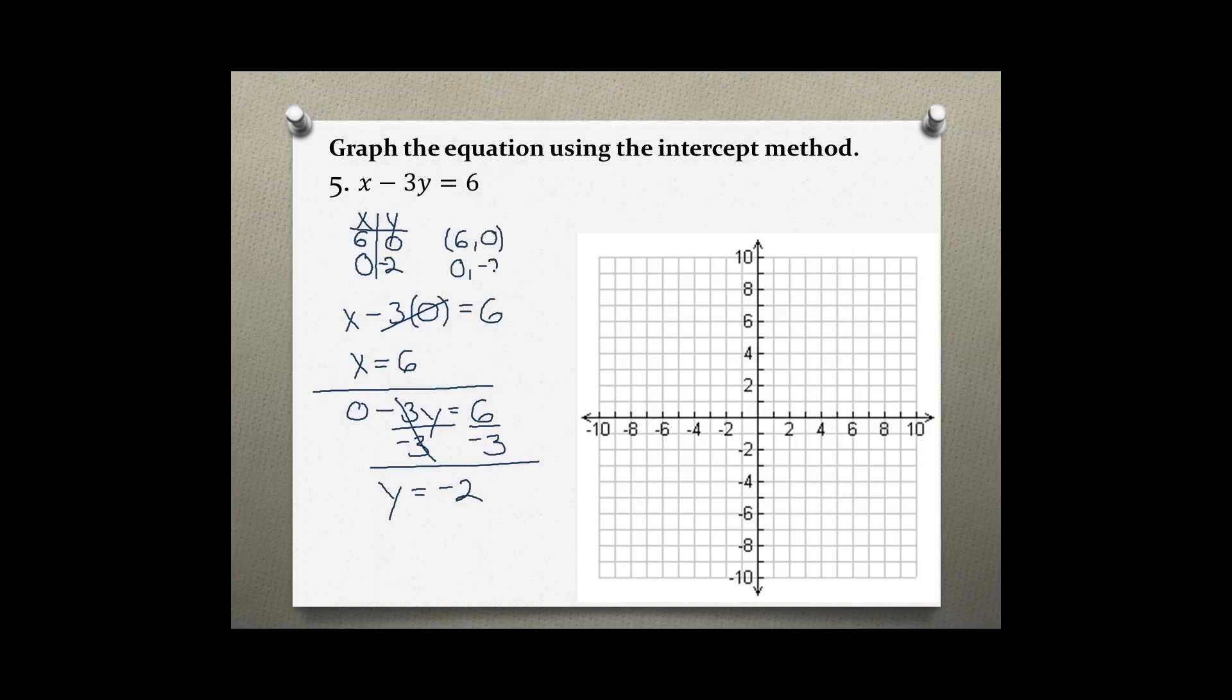And then plot these two points on the coordinate system. Starting at the origin, plotting the first point. 6 on the x axis and 0 on the y. This is my first intercept, my x intercept.